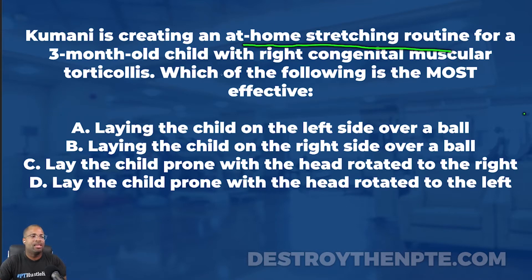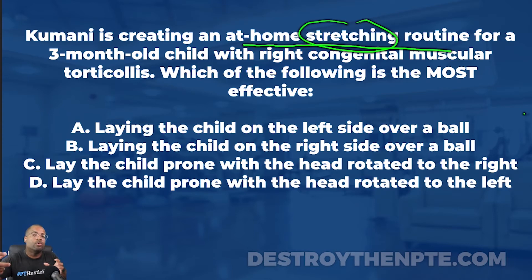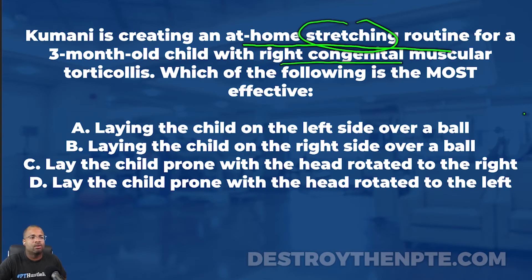We're creating an at-home stretching routine — I think it's important to keep in mind that we are trying to stretch this patient. So we want to keep that in mind as we start to look at the answer choices, because we want the answer choice to match that. They sometimes abbreviate it as CMT, so I think it's important for us to slow down and really understand what muscular torticollis really is.